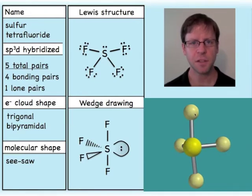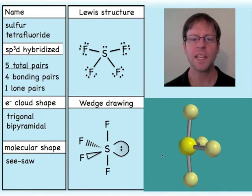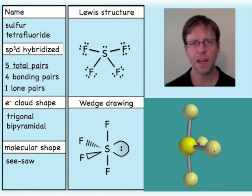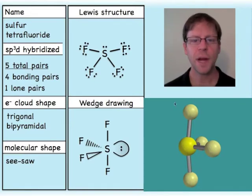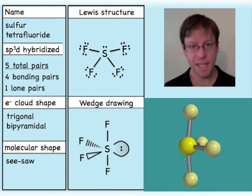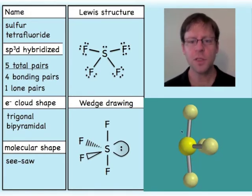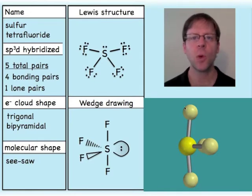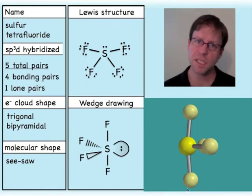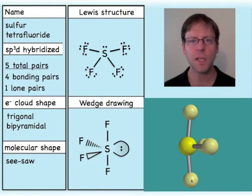With sulfur as the central atom, two fluorines plus a lone pair occupy that central ring in the same plane, while the other two fluorines are the top and bottom. The lone pair appears on the central ring because it has more room there. Lone pairs will not occupy the axial top or bottom positions because those are more confined, and a lone pair takes up more physical room than a bonded atom. This also pushes the axial atoms slightly away from being collinear.